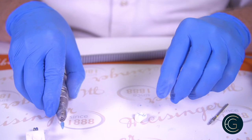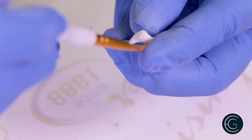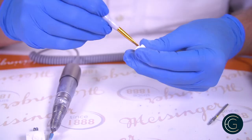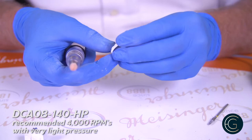So at this point, I'm going to take a brush, and I'm just going to clean off any of the extra material on here. This will not contaminate the surface, and then I'm going to go to a finer grit polisher. I'm going to go to the DCA08, the 140, followed by the DCA110040. Between 4,000 and 4,500 RPM.